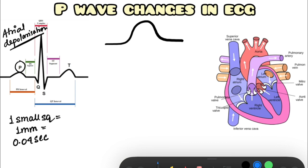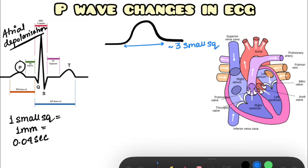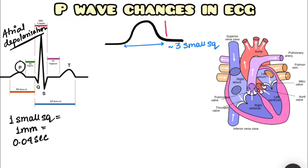You will see that the breadth of this normal P wave is approximately 3 small squares, and the height is normally within 2.5 small squares.